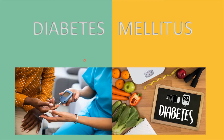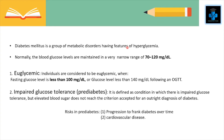Welcome to Medifaction. Today let's learn about diabetes mellitus. Diabetes mellitus is a group of metabolic disorders having features of hyperglycemia, which means increased blood glucose level. Normally the blood glucose levels are maintained in a very narrow range of 70 to 120 milligrams per deciliter.